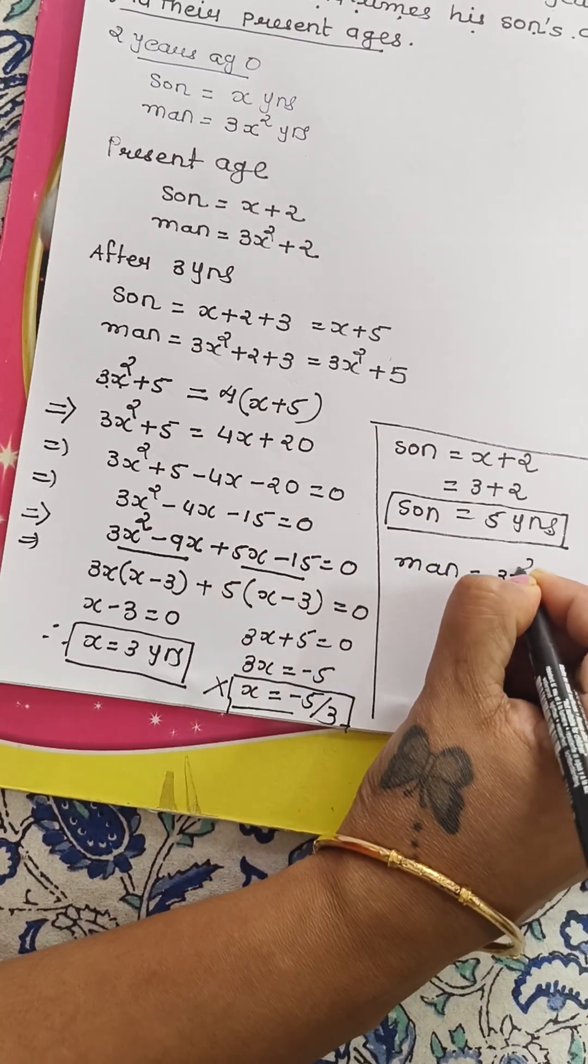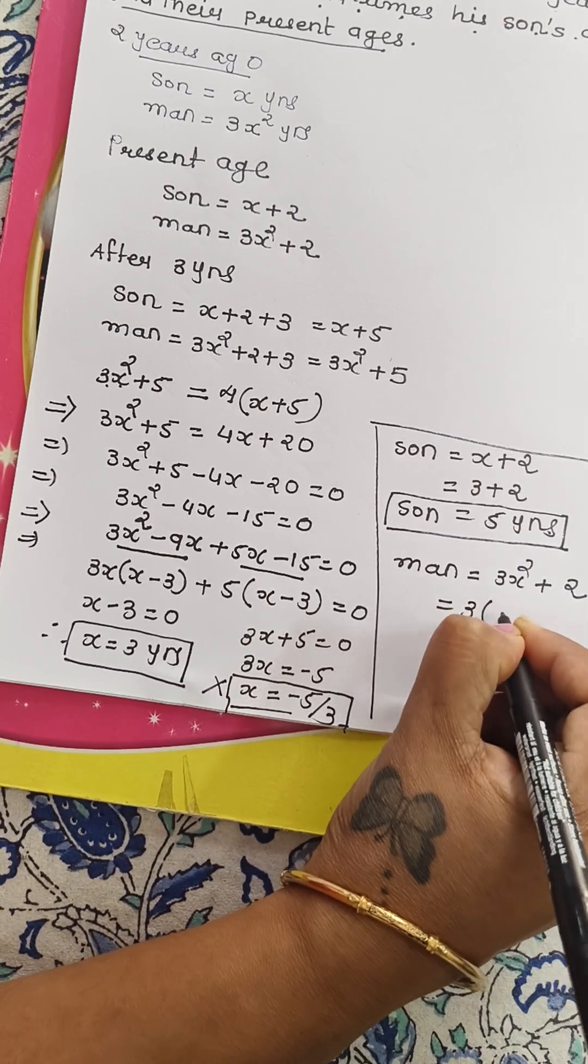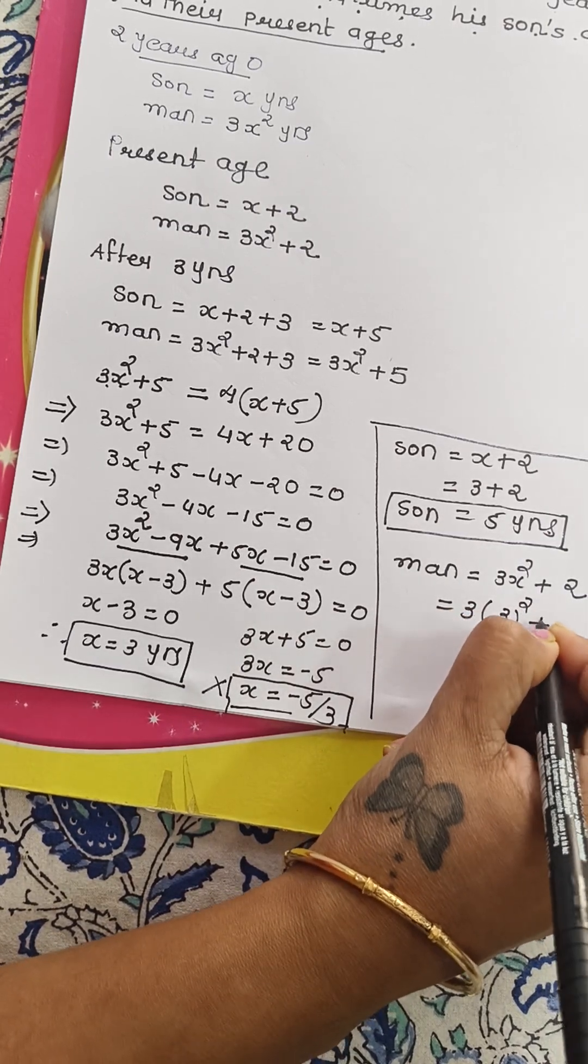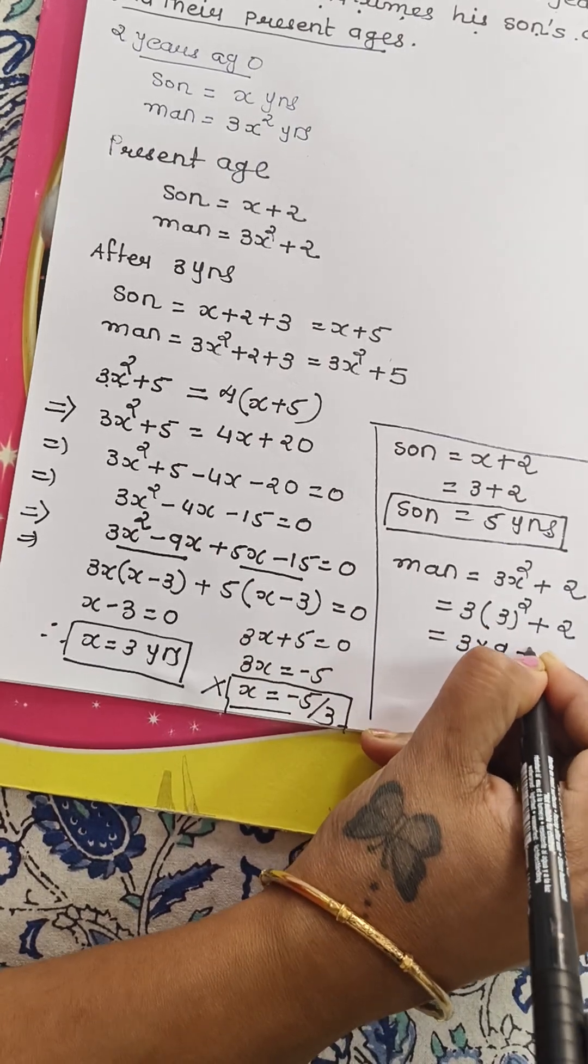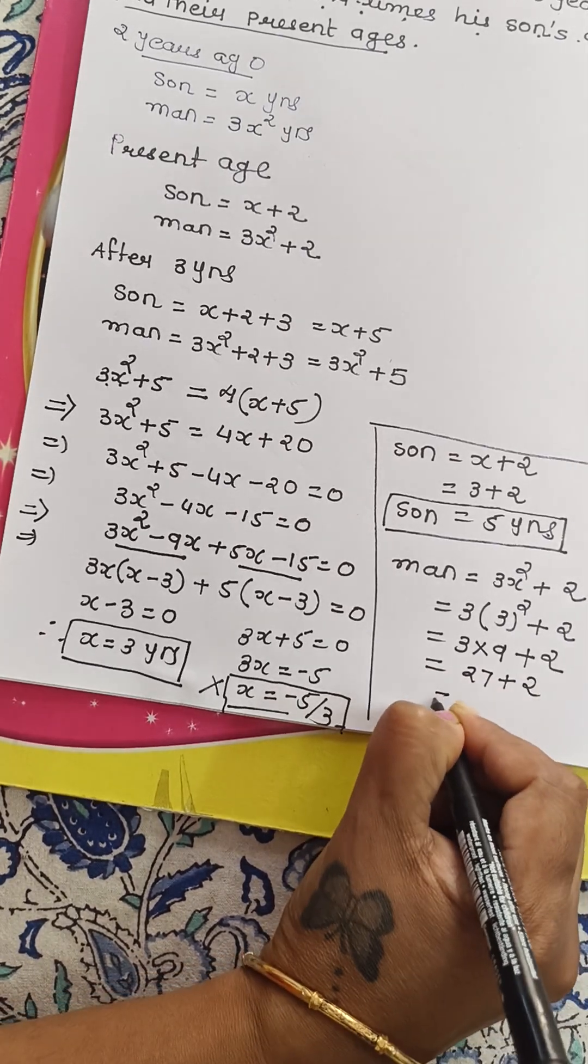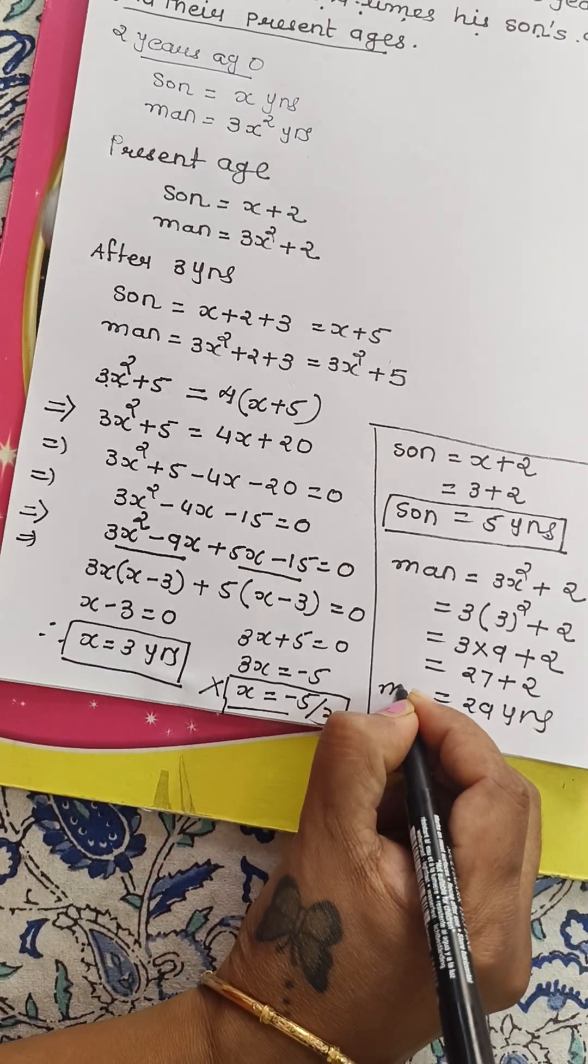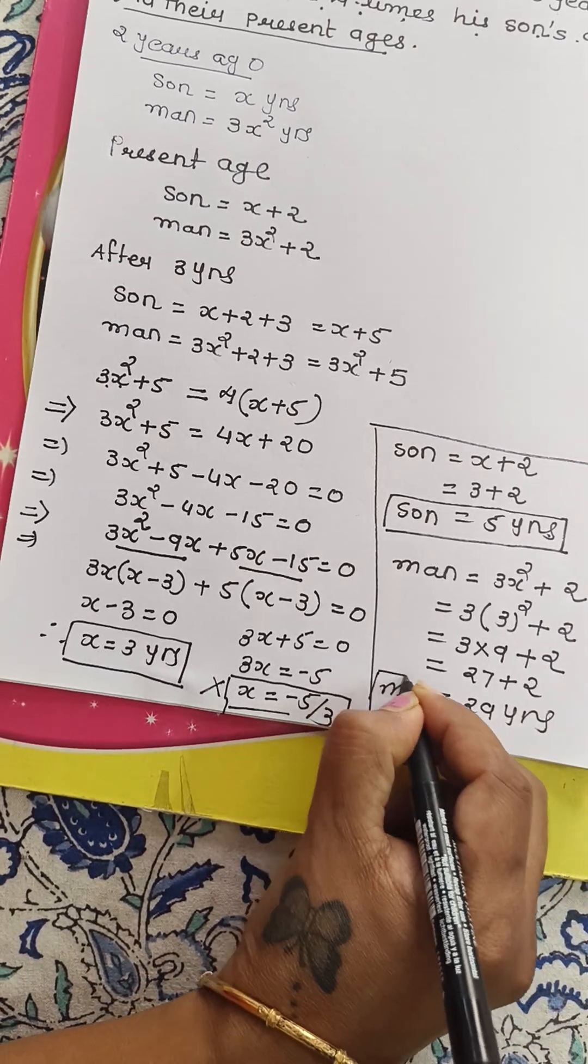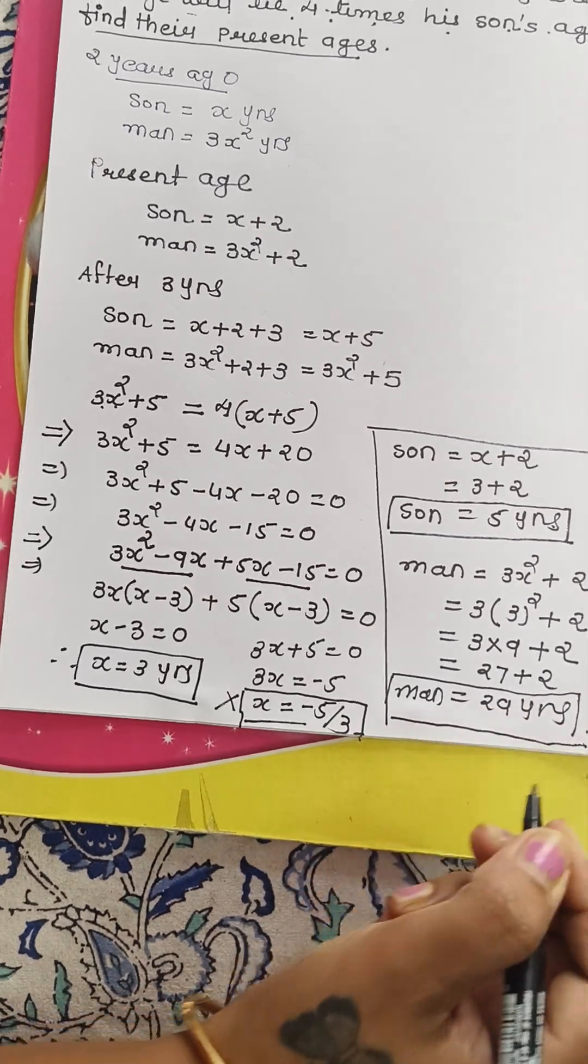Man, 3X square plus 2. That is 3 times 3 square plus 2. That is 3 times 9 plus 2. So 27 plus 2. That is 29 years. So man is 29 years old. And son is 5 years old.